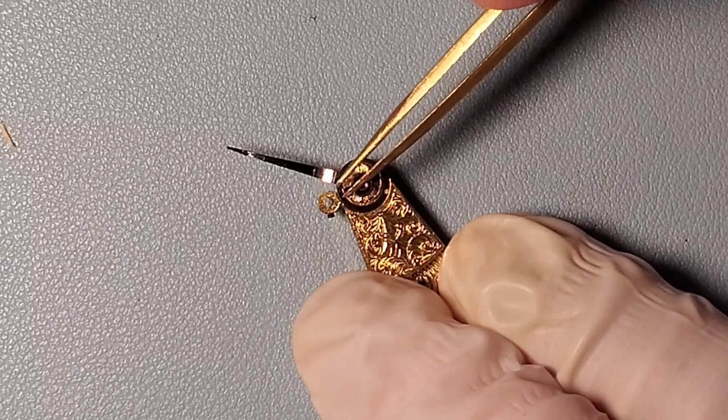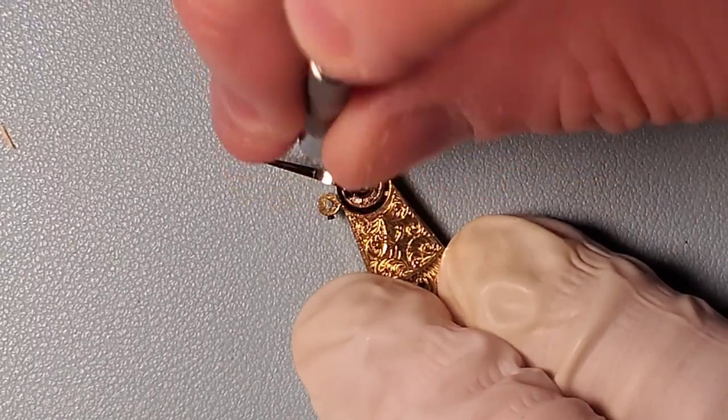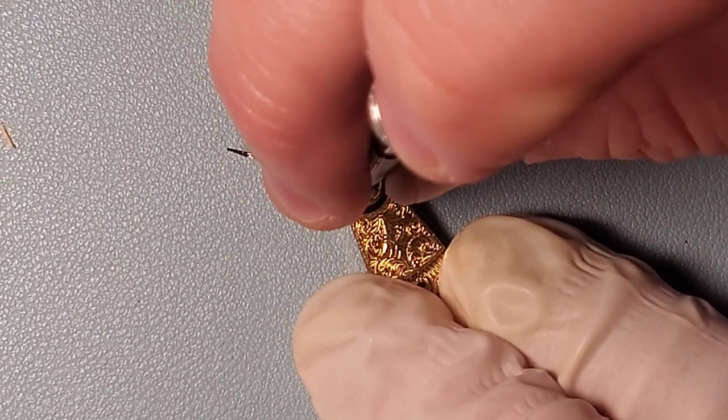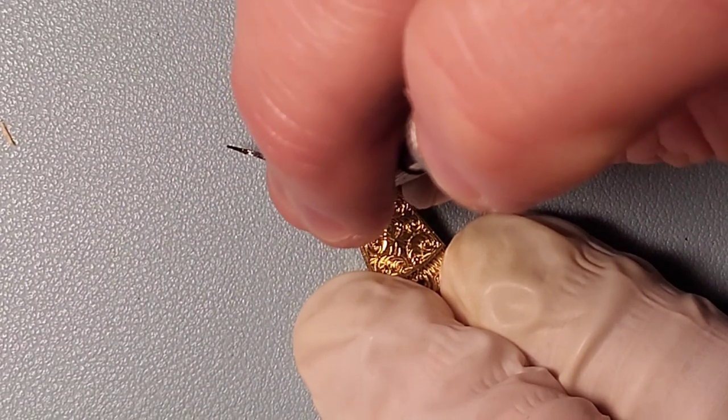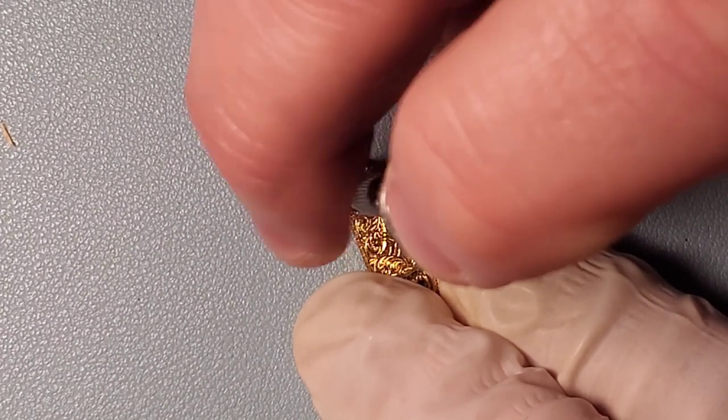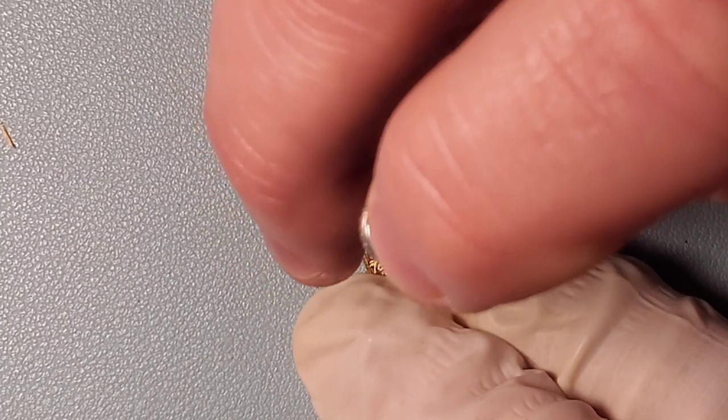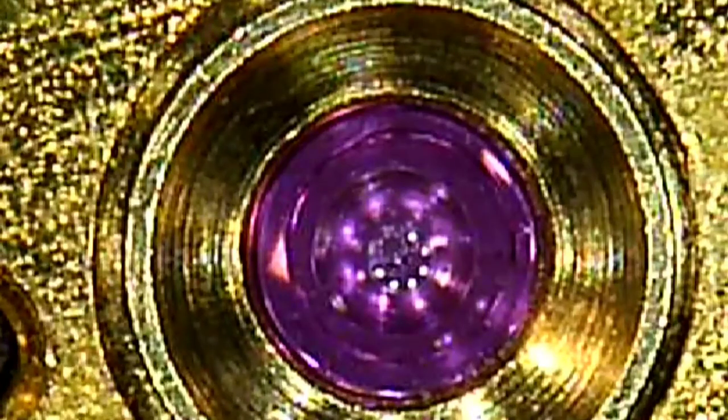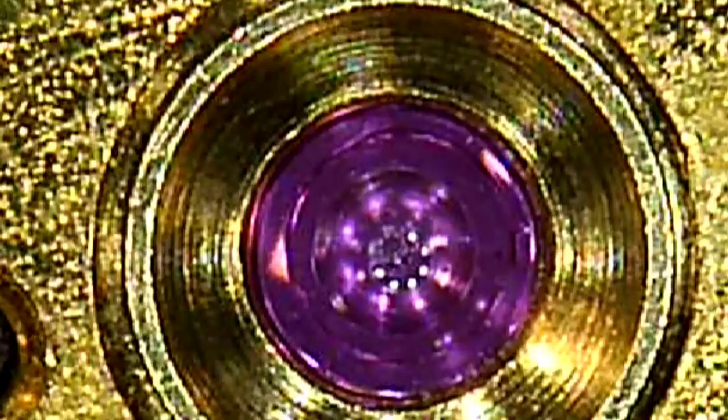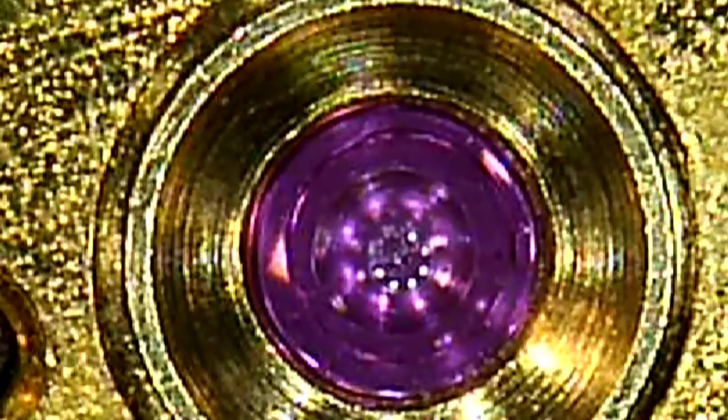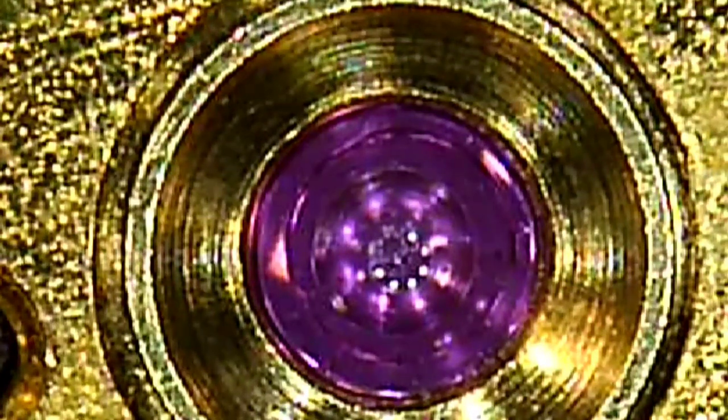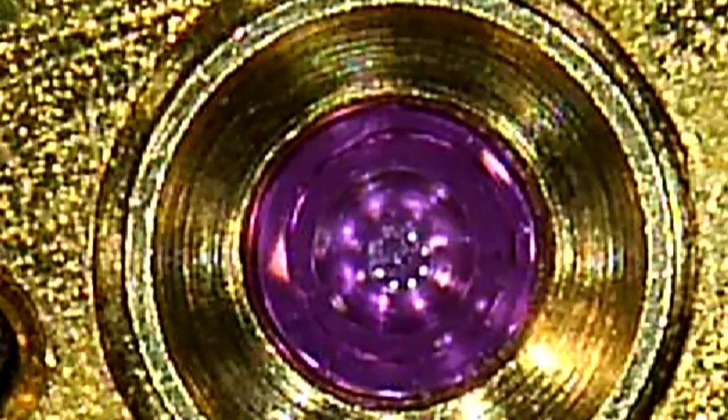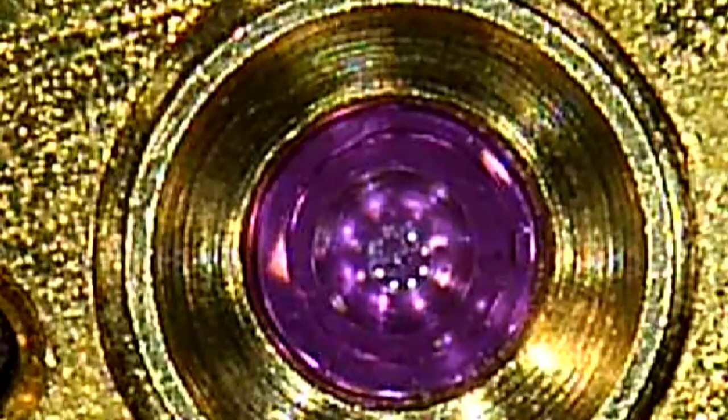And I only screw these in just until I feel resistance. These screws are small and easily stripped. And the last check I make is to ensure that the jewel is oiled properly. Now here I'm looking for a well-defined border of that oil droplet in order to provide the correct lubrication for the center of the jewel.